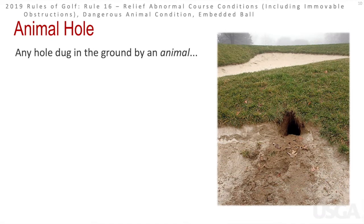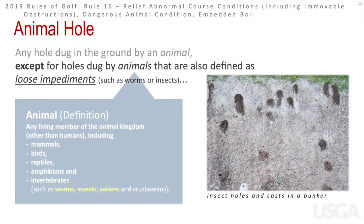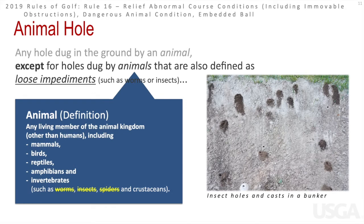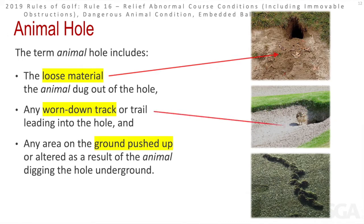The definition of an animal hole is any hole dug in the ground by an animal. The exception is it does not include animals categorized as loose impediments, such as worms, insects, and spiders — those are covered under the loose impediment rule. An animal hole also includes the loose material dug out from the hole, the tracks an animal makes leading up to it, and any area of ground pushed up or altered as a result of the animal digging underground.